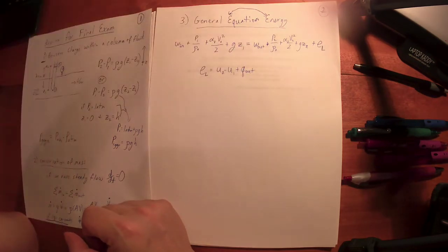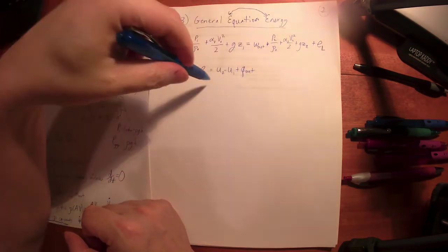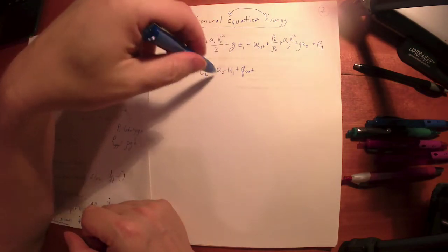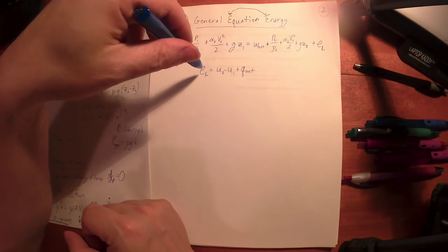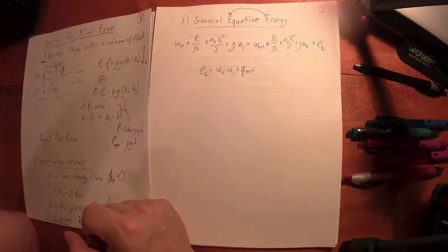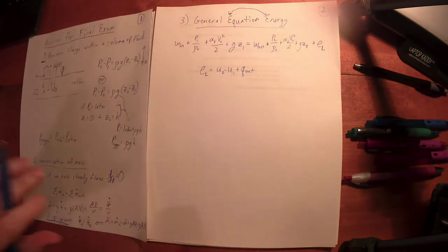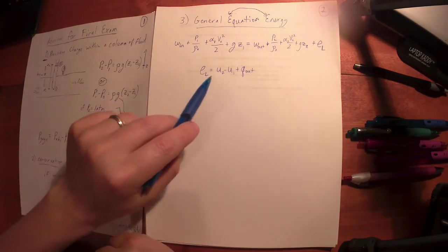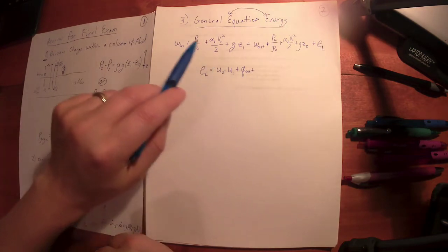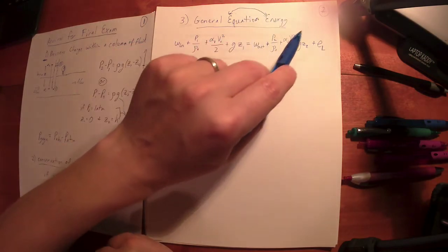Those of you that had thermodynamics, this is a change in internal energy plus any heat little q out. This is not how we would normally find this term. We talked in chapter 8 at length about how do we find this term for pipe flow. We have other models for other situations, but this is what it represents.